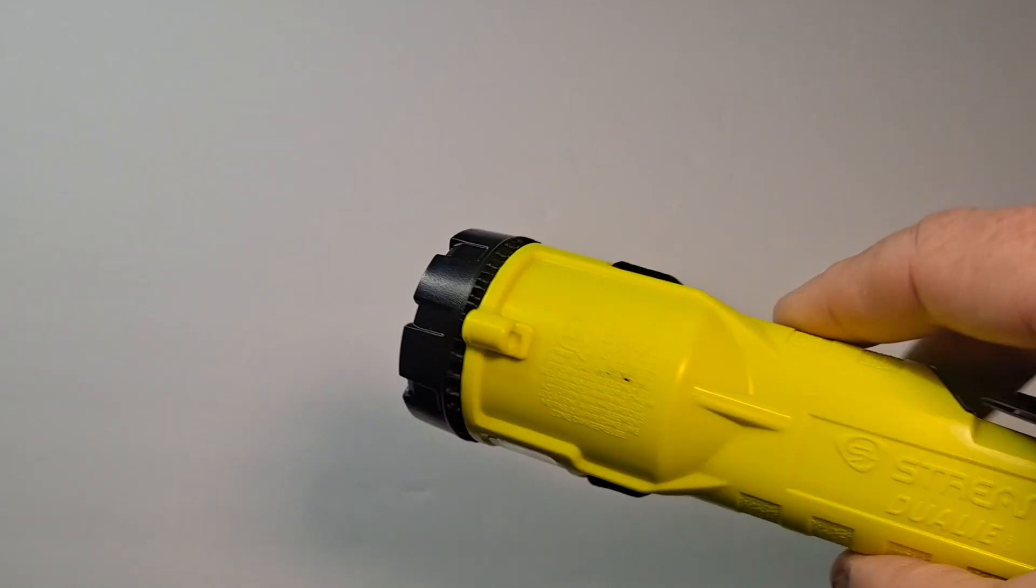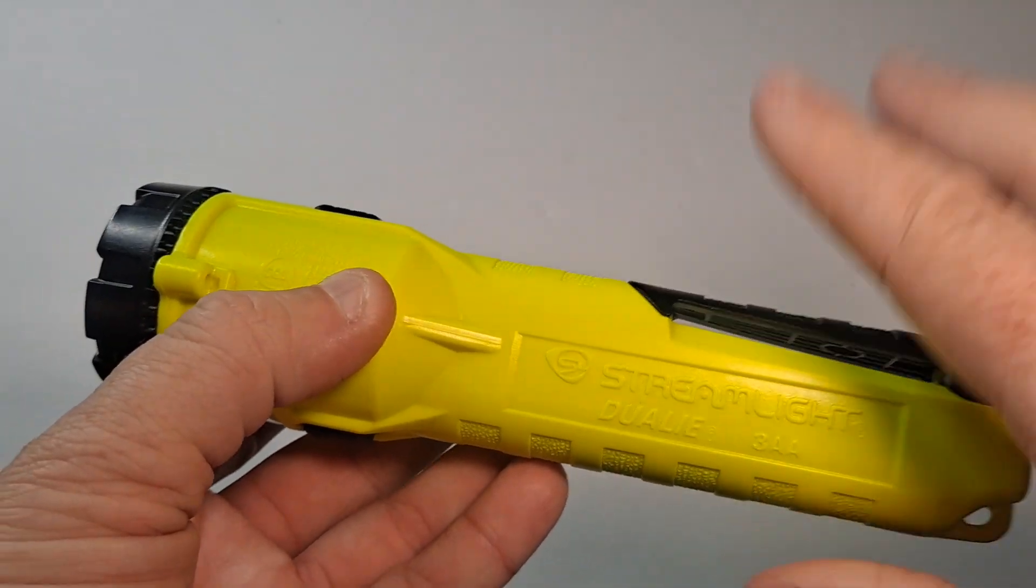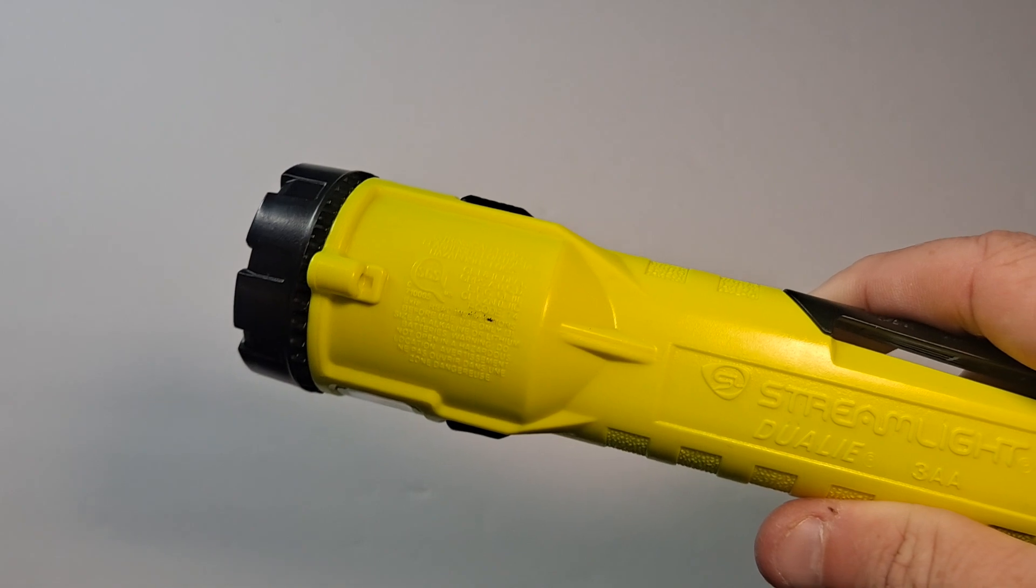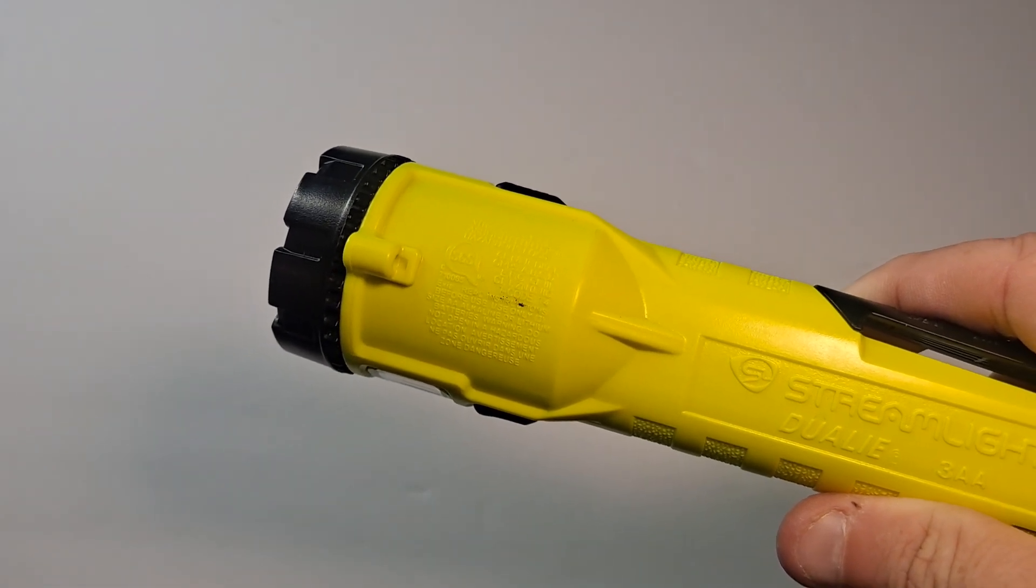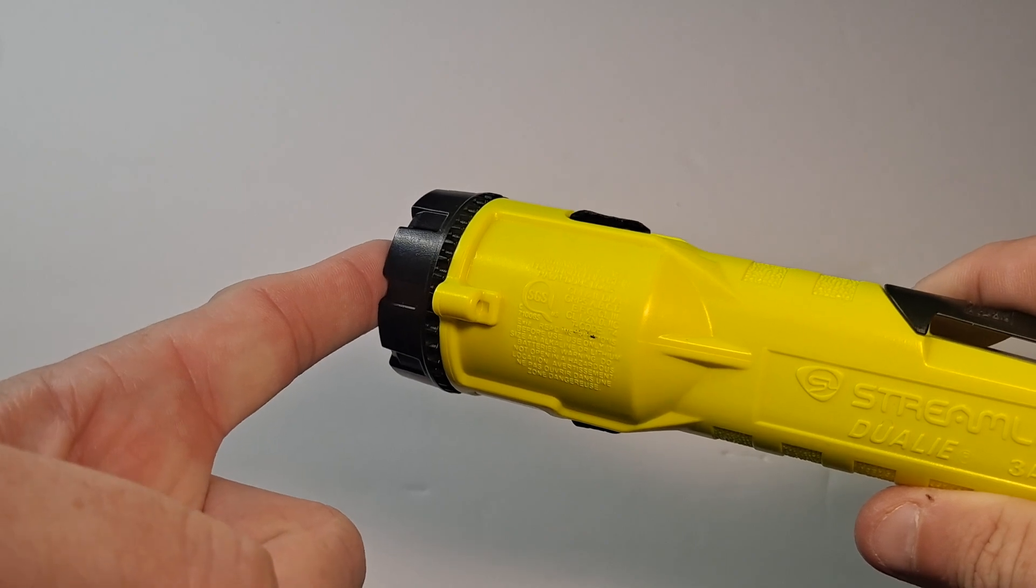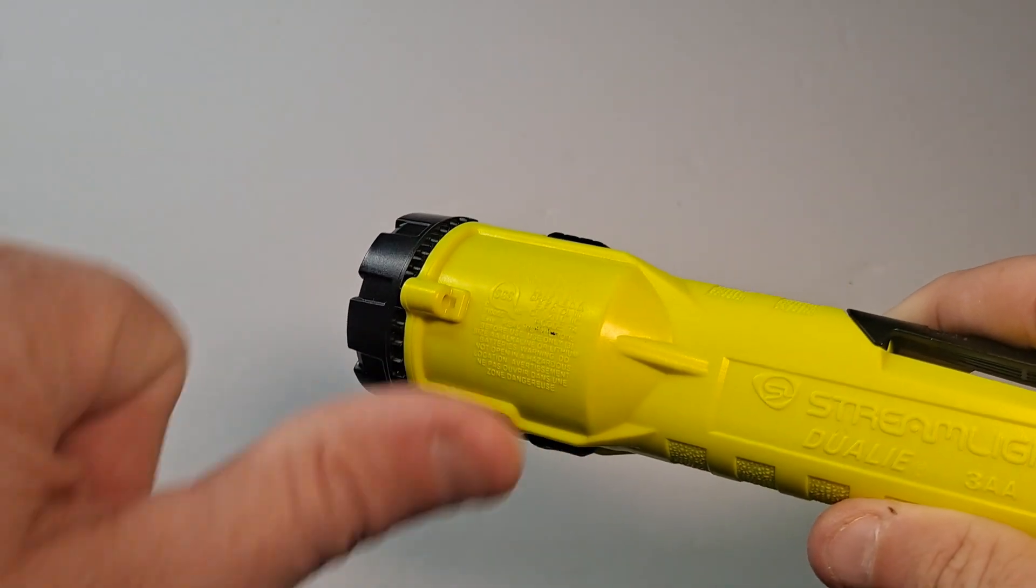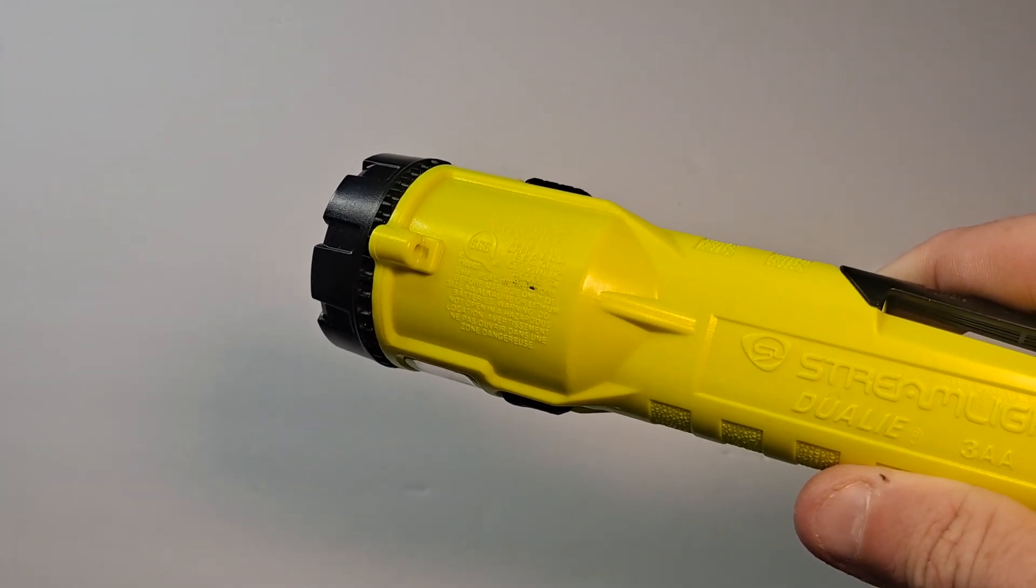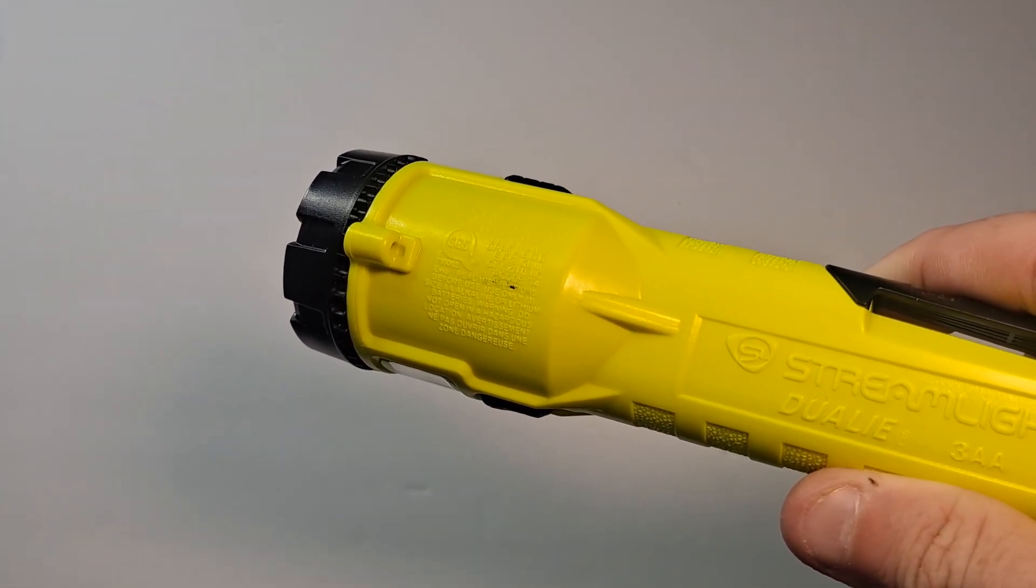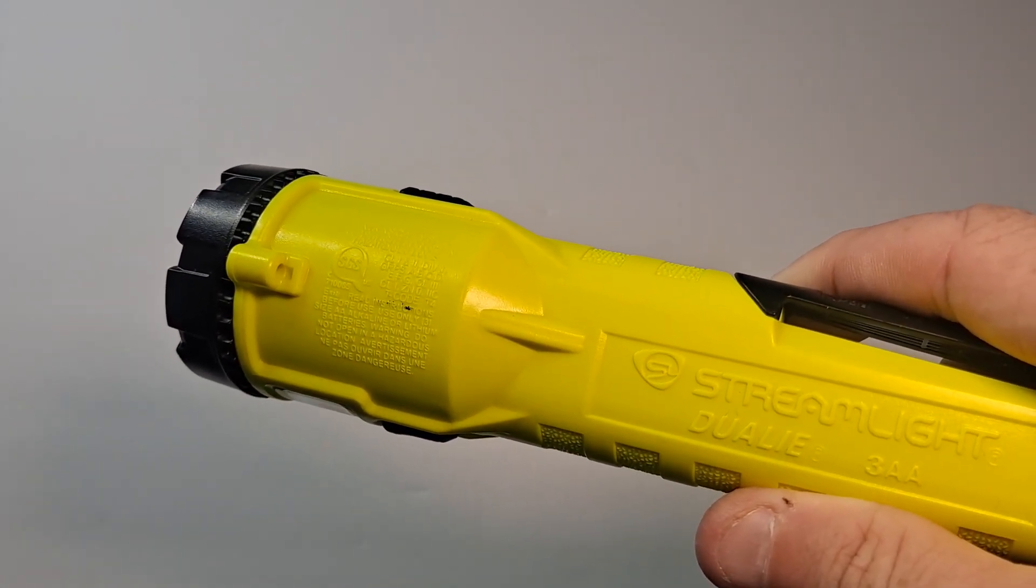The cool thing about this is it's got three AA batteries inside. It comes with three AA batteries in the package. If you run just the spotlight it'll last for 18 hours. If you run just the bottom light it'll run for 18 hours. If you use both at the same time it'll last nine hours, which makes sense because that would be half.